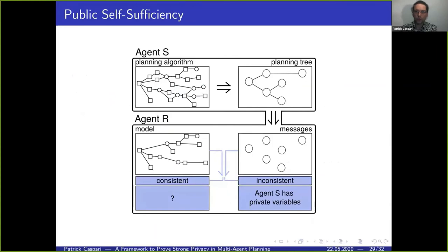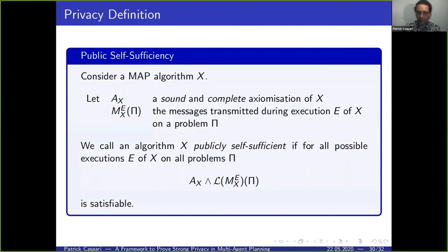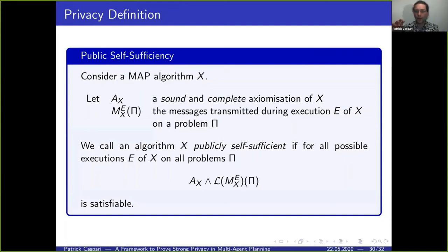To check whether these axioms and our messages are consistent, here is the key definition. If we have a multi-agent planning algorithm X and an axiomatization of this algorithm that is sound and complete — meaning the axioms accurately refer to the algorithm and the valid planning trees are exactly those generated by the algorithm — then we can test consistency between the axiom set and the logic formula describing the messages.